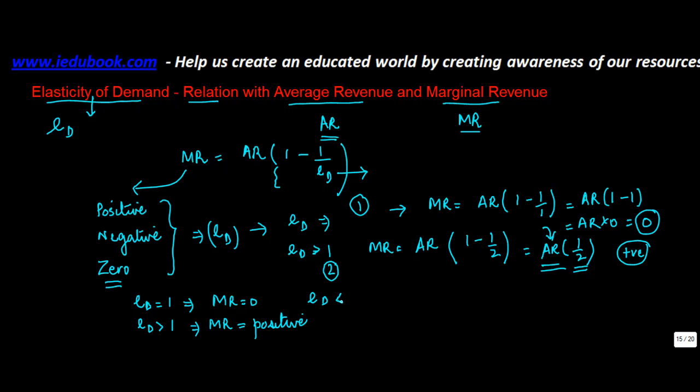Let's take the third situation where ED is less than 1. So then our marginal revenue will become AR into 1 minus, let's say it's equal to 0.5.